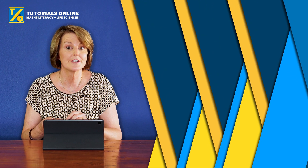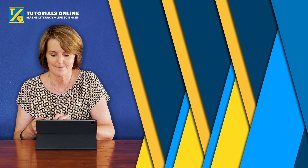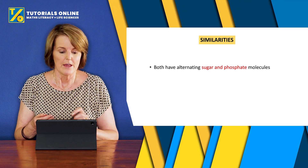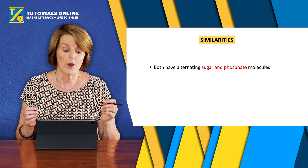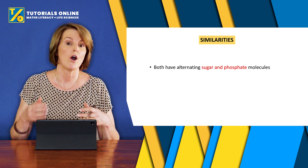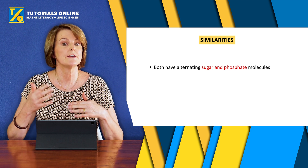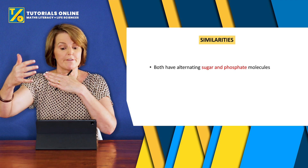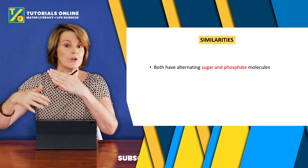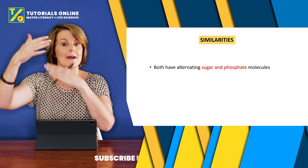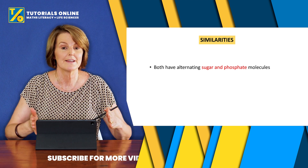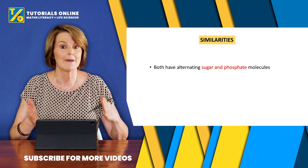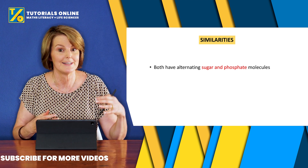Let's look at the similarities first. The first thing is that they both have alternating sugar and phosphate molecules that make up the backbone — the ladder that makes up the double helix.